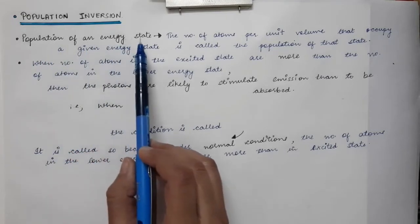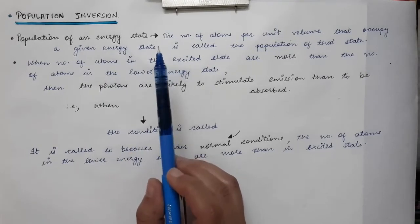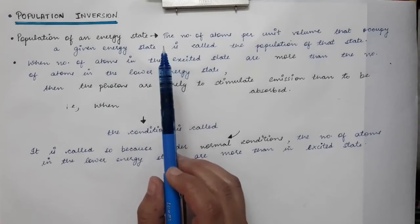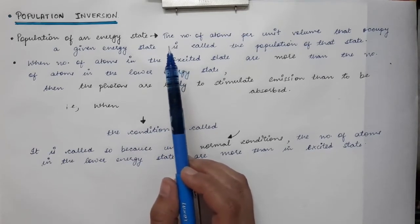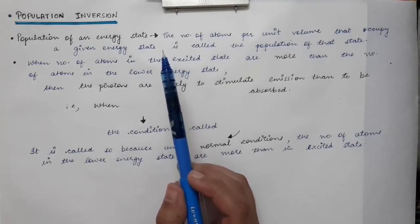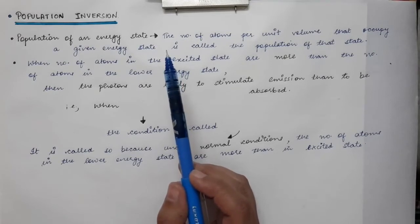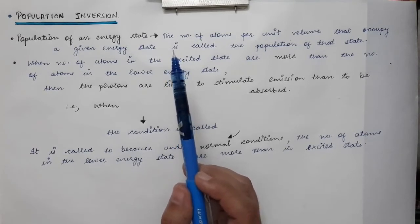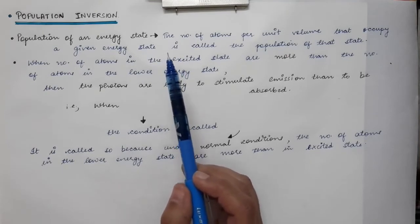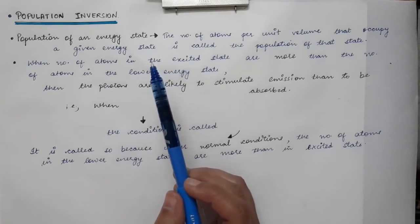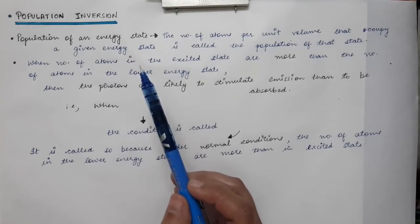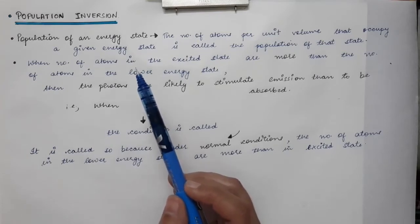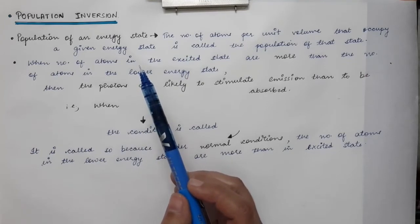First, what is the population of an energy state? Inside a laser, one of the key components is the gain medium where lasing action occurs. In this medium there are atoms or molecules with various energy states. Under normal conditions, most atoms are in the ground state because it is the most stable, so the population of the lower level is higher than that of the higher energy level.